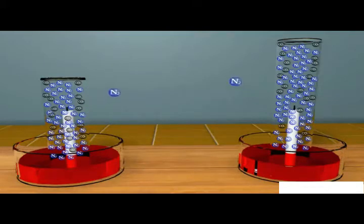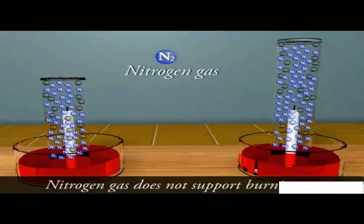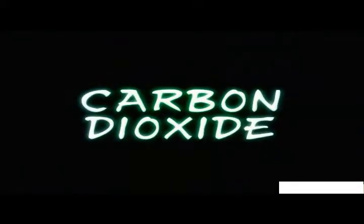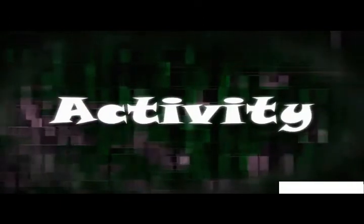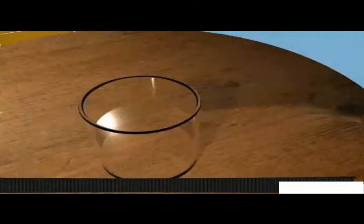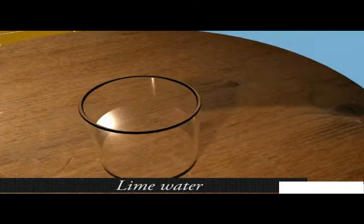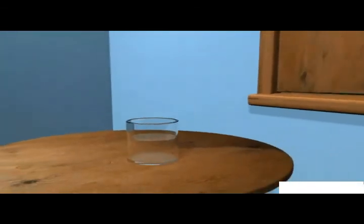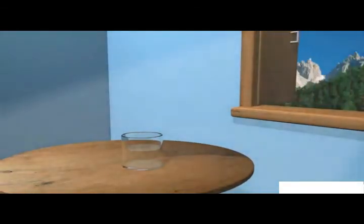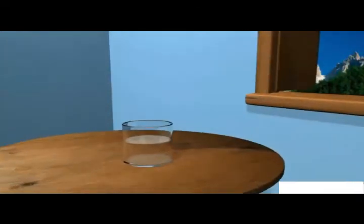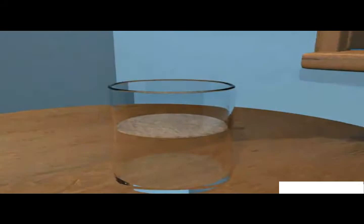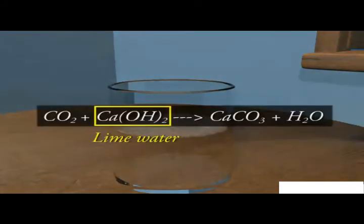The major part of air which does not support burning is nitrogen gas and carbon dioxide. Activity: Take some freshly prepared lime water in a beaker and keep it inside a room with cross ventilation for a day or two. Observe that a white thin layer appears on the surface of lime water because lime water reacts with carbon dioxide.